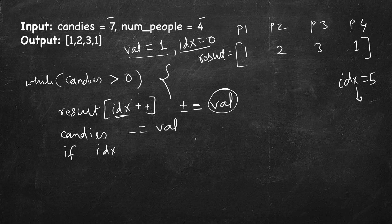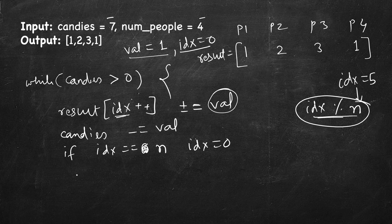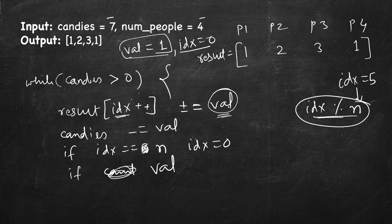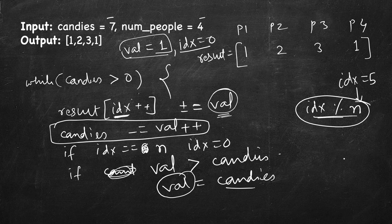When the index reaches n (the number of persons), you reset it to zero — or equivalently use idx modulo n. The value val represents the next scheduled amount to give to the next person, and we increment it each iteration. If val becomes more than the remaining candies, we set val equal to the remaining candies — that is what will be assigned to the person at the current index, and then candies becomes exactly zero.